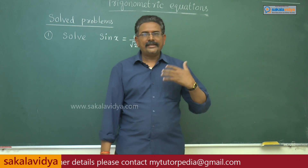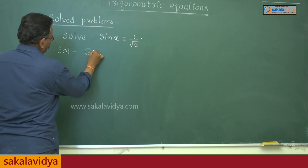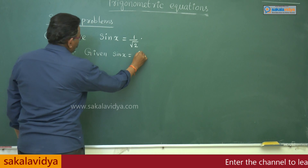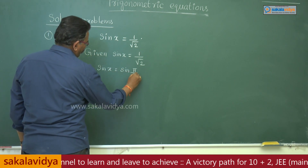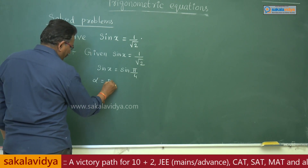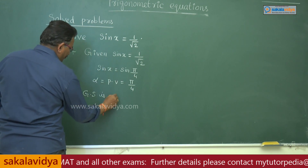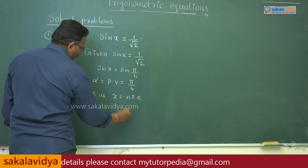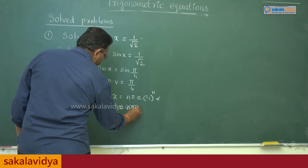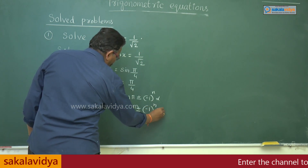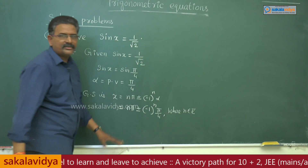Let us solve: given sin x = 1/√2. We can write sin x = sin(π/4), where the principal value alpha = π/4. The general solution is x = nπ + (-1)^n · α = nπ + (-1)^n · (π/4), where n belongs to integers. This is the answer for this problem.